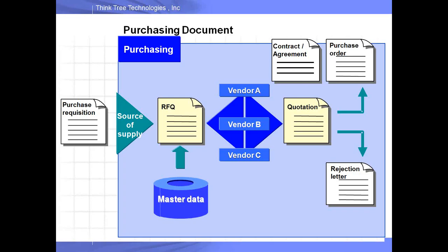Let me talk about procurement of a stock item. The process starts with a purchase requisition — a document that collects the requirement, specifying which material is needed, in what quantity, and by what date. Next is source of supply, then we create an RFQ (request for quotation), which is sent to one or more vendors — vendor A, vendor B, vendor C. We receive quotations from them. The accepted quotation is converted to a purchase order; the rejected ones become rejection orders. We can also create a contract or agreement if we want to buy from a vendor long term.